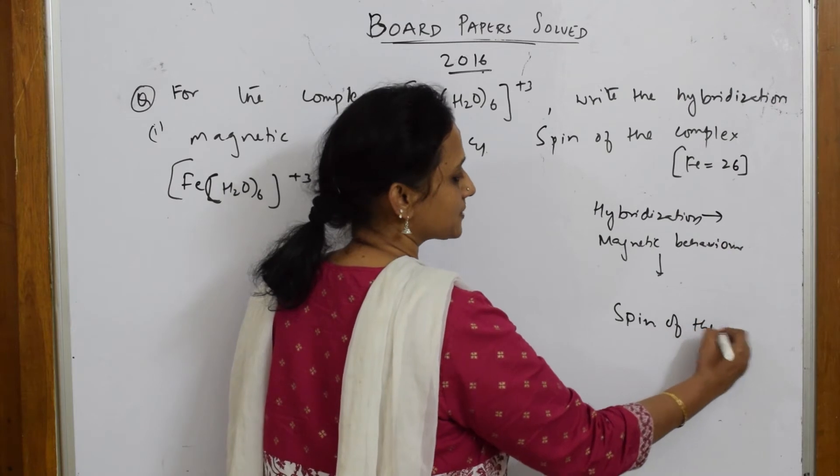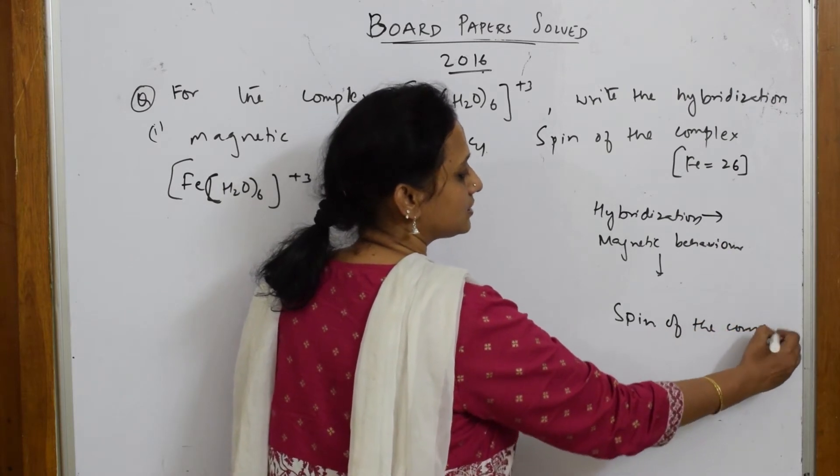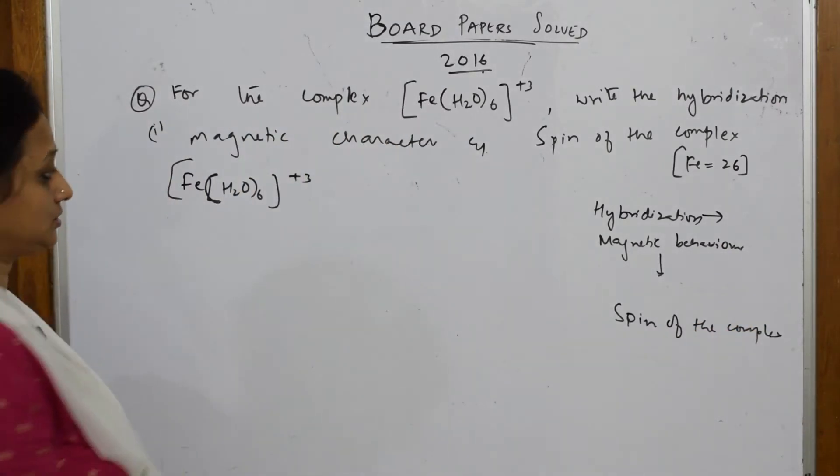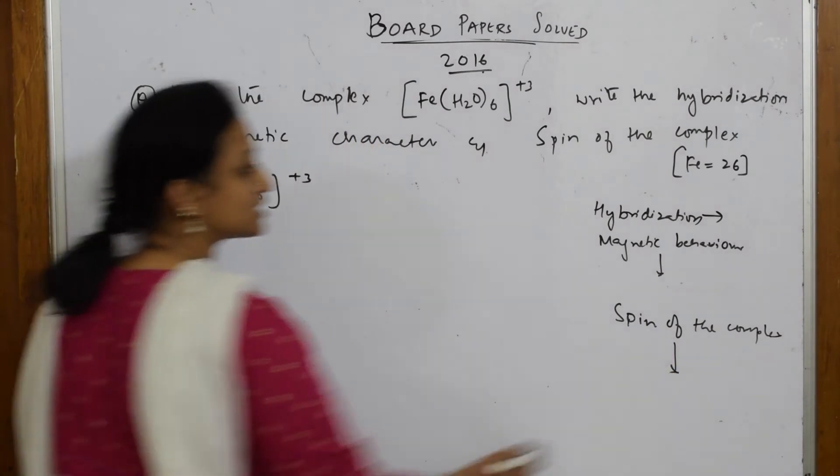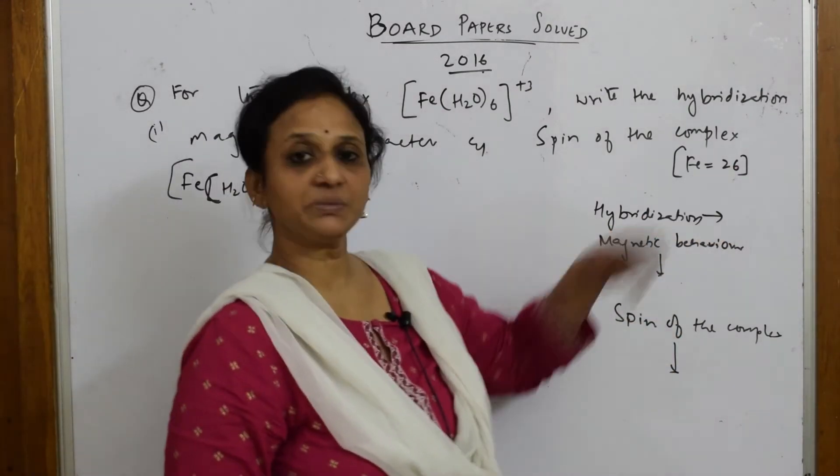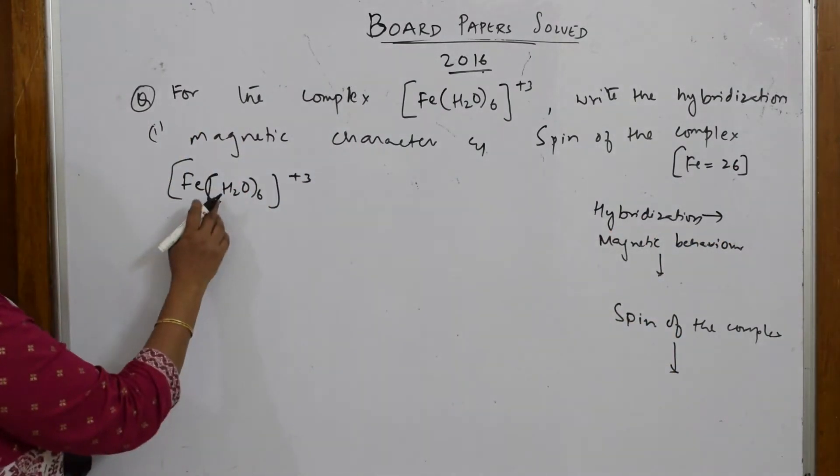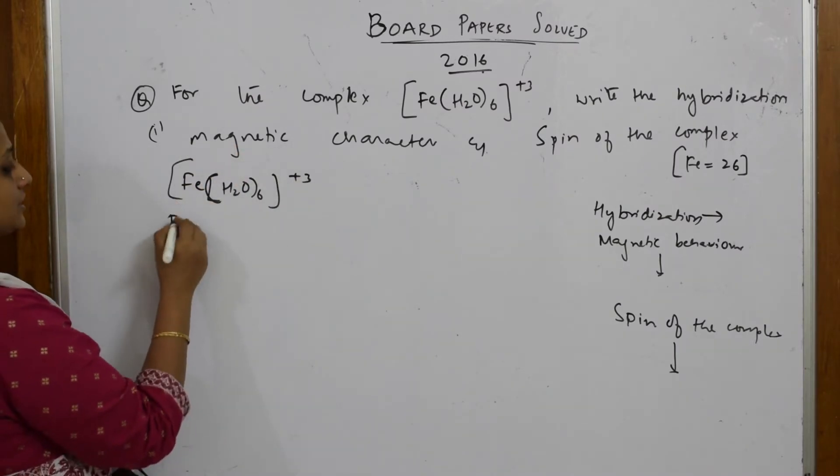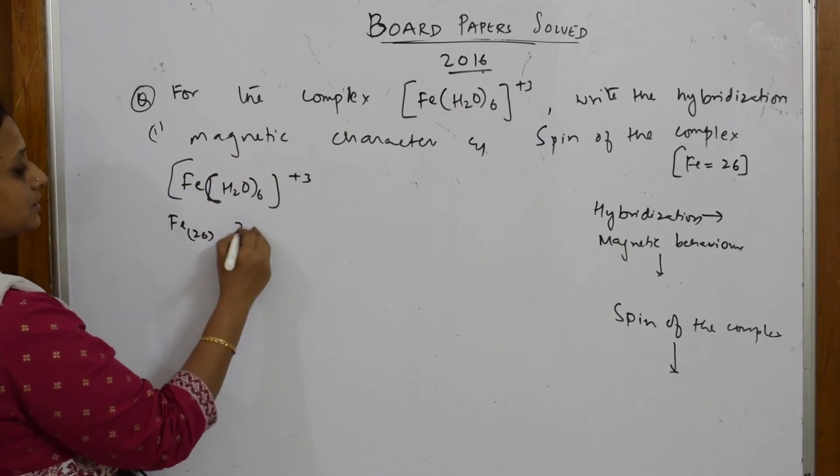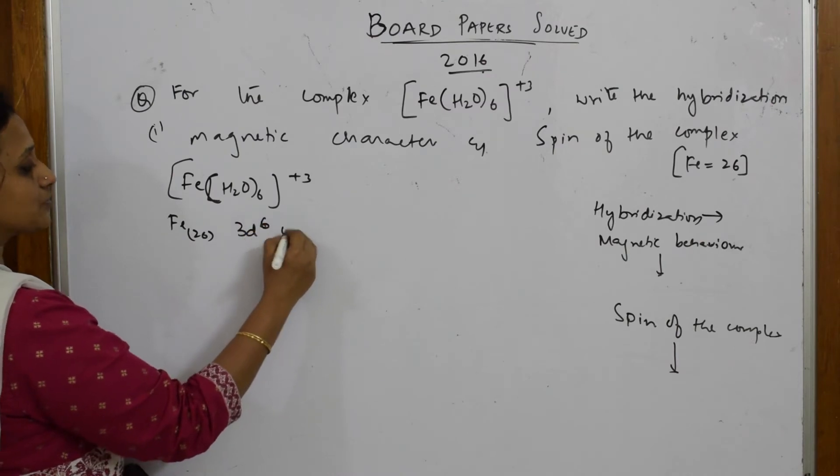When I have such a complex given, first see the atomic number. Iron's atomic number is 26, so I'm writing the configuration: 3d6 4s2.